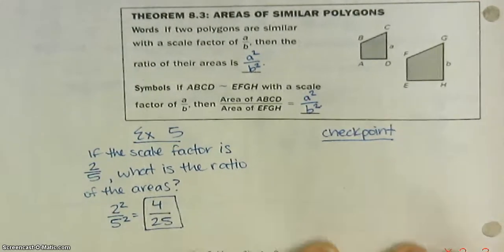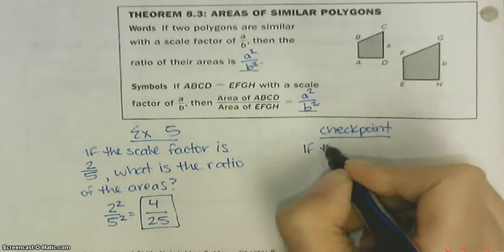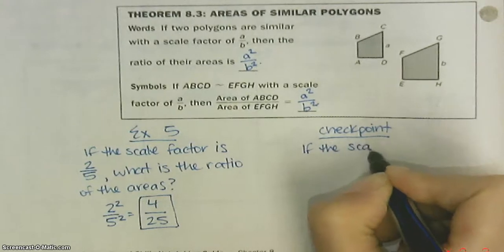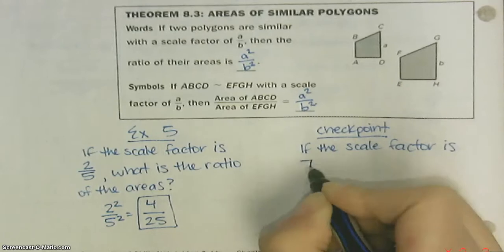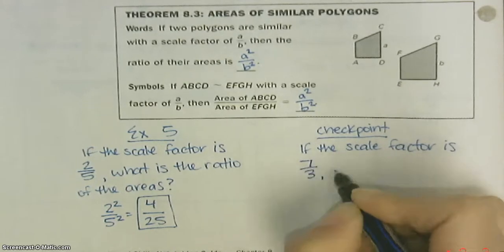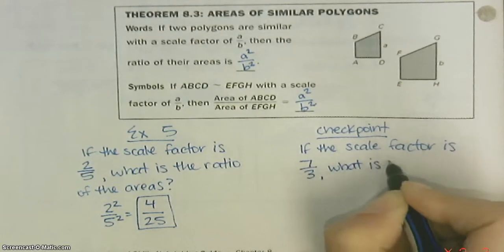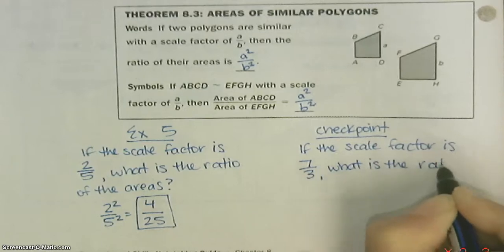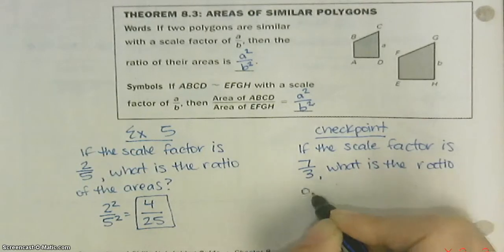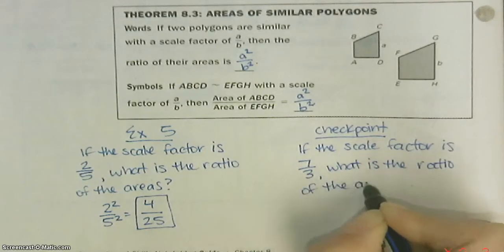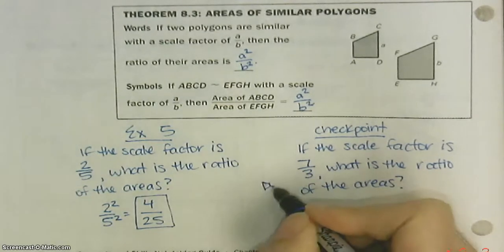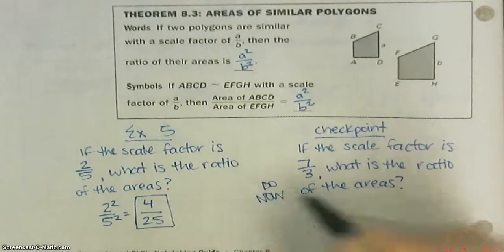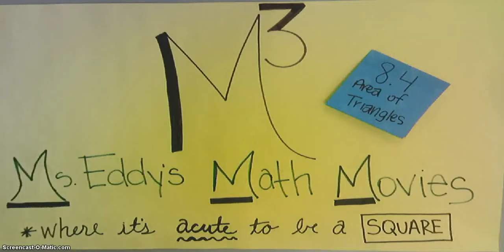Here's yours: if the scale factor is seven to three, what is the ratio of the areas? Do this now. This is M-cubed signing out. Thank you.